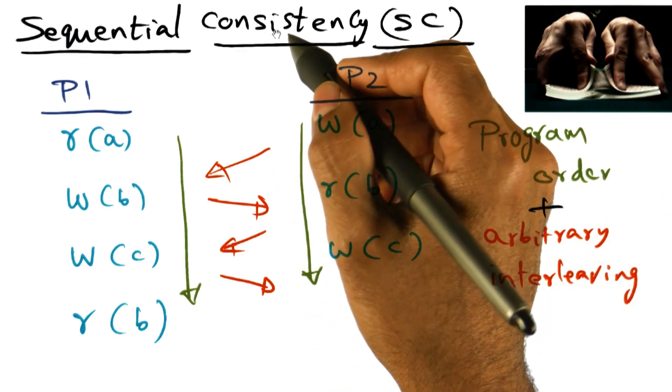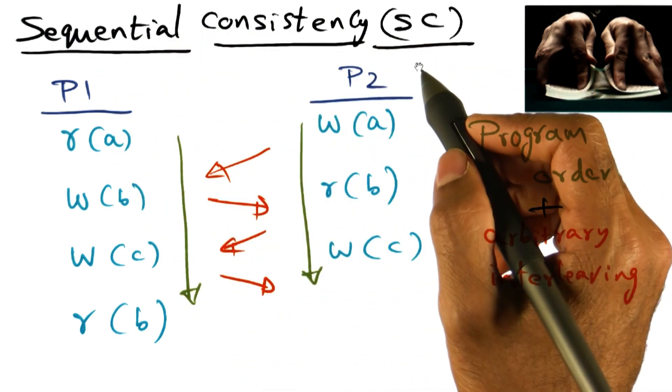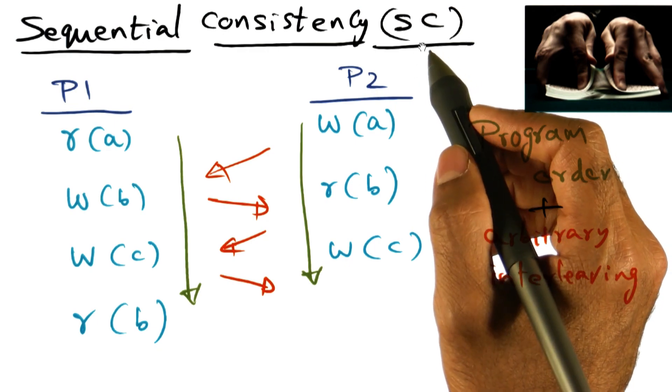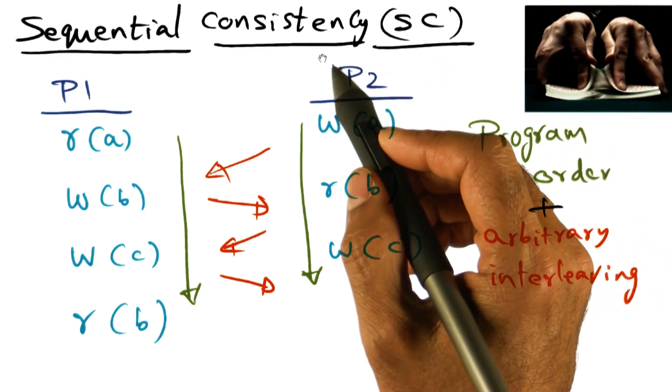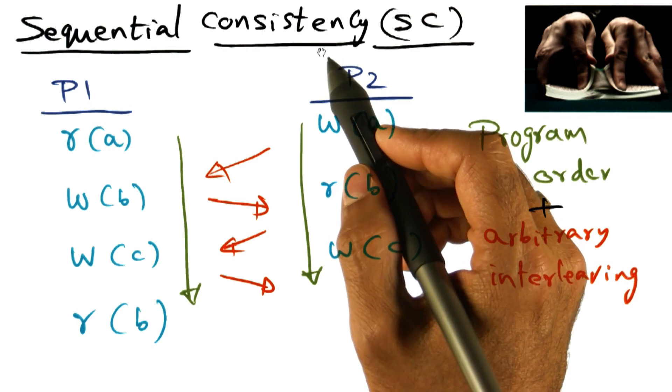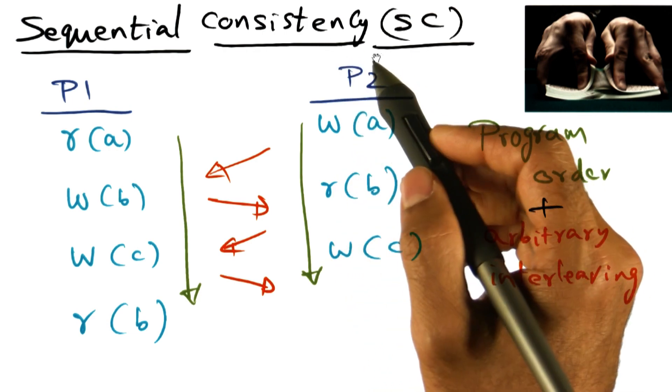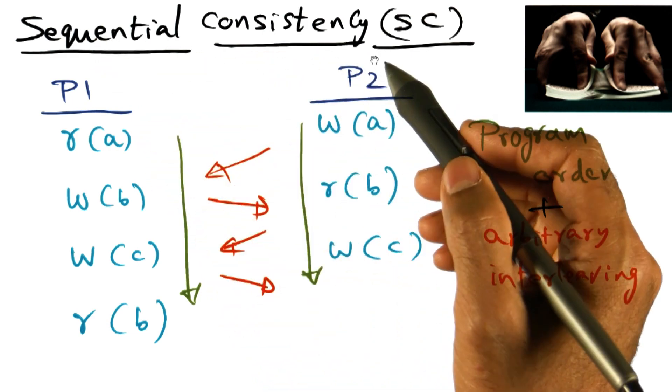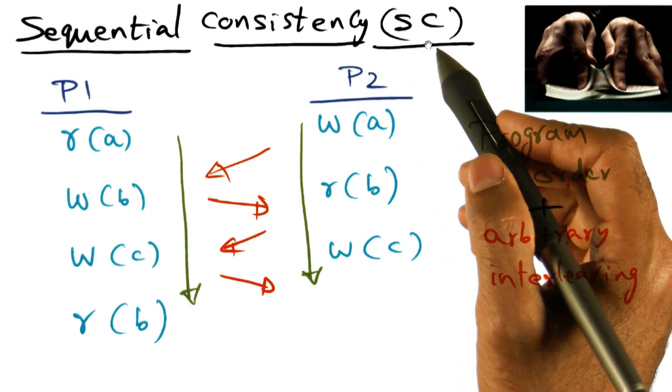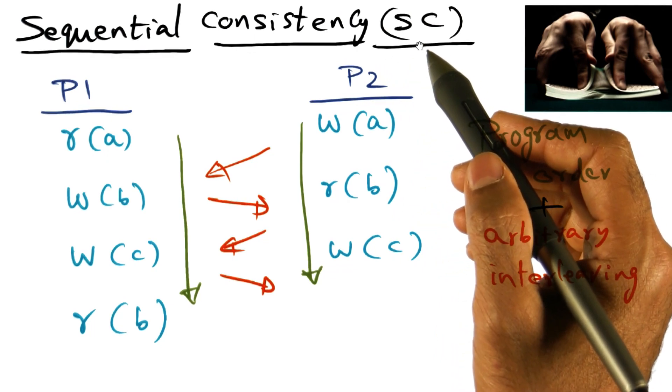By the way, this particular memory consistency model, sequential consistency was proposed by Leslie Lamport. And this is a popular guy. You're going to see him again later on when we talk about distributed systems. But he came up with this idea of sequential consistency memory model back in 1977.